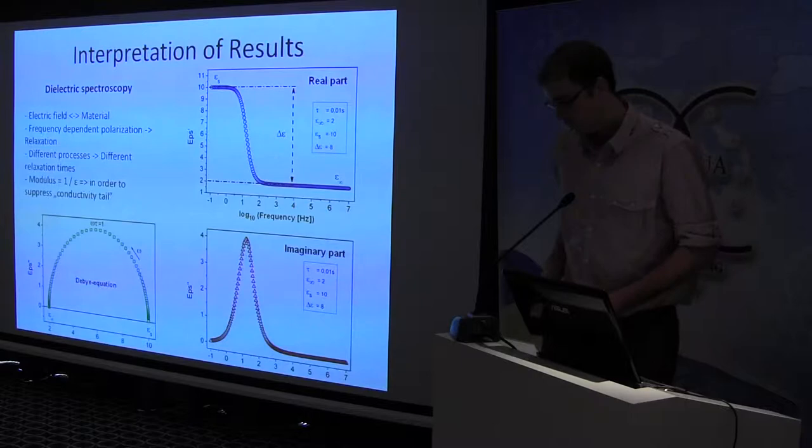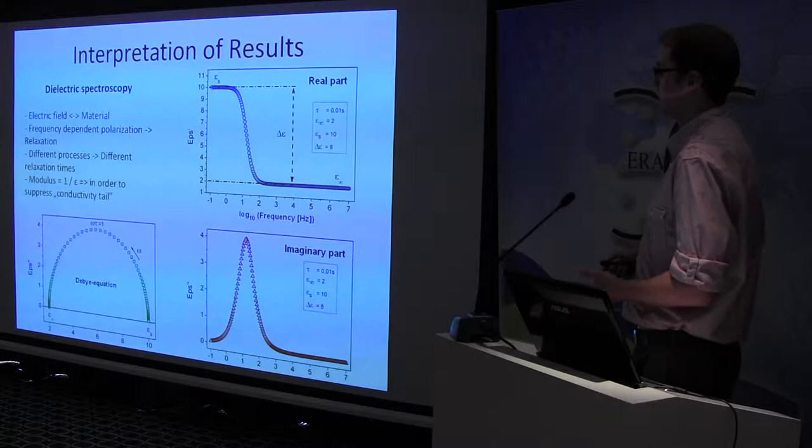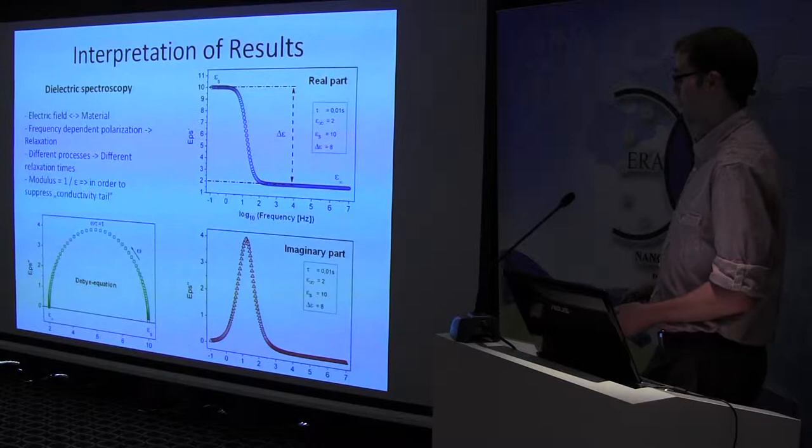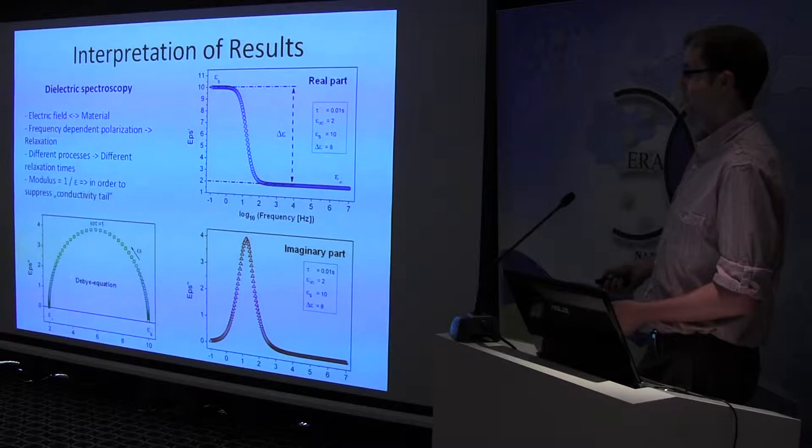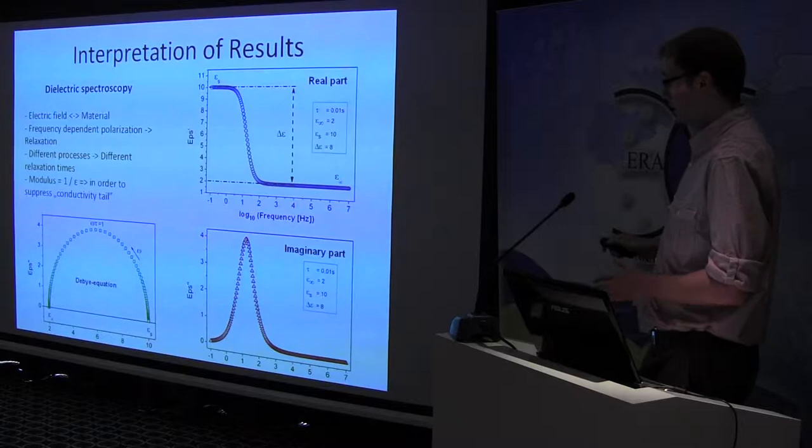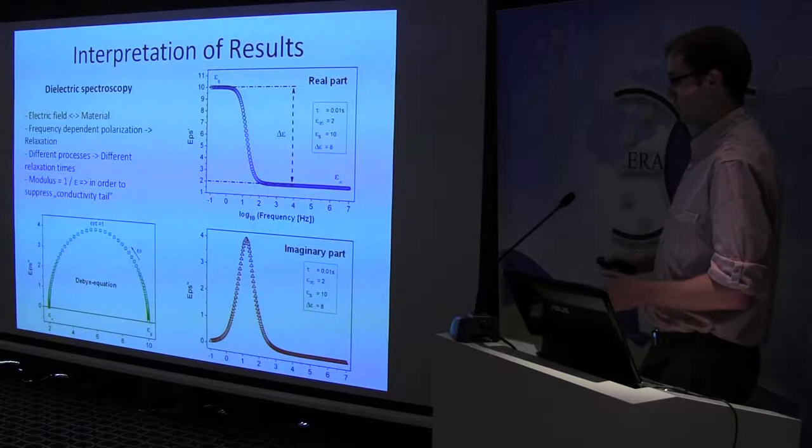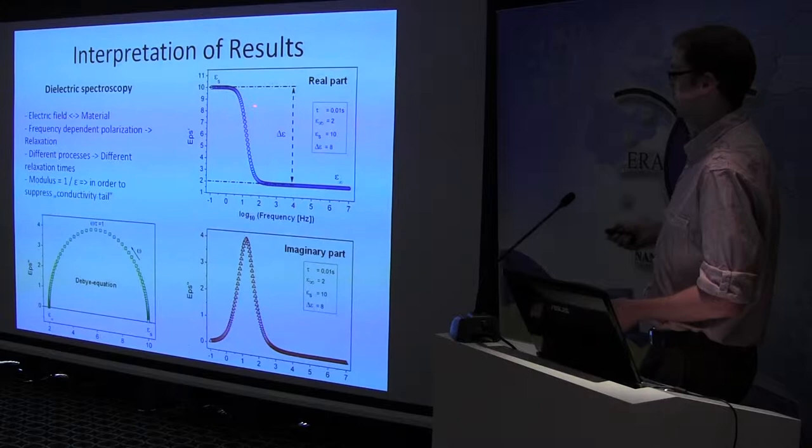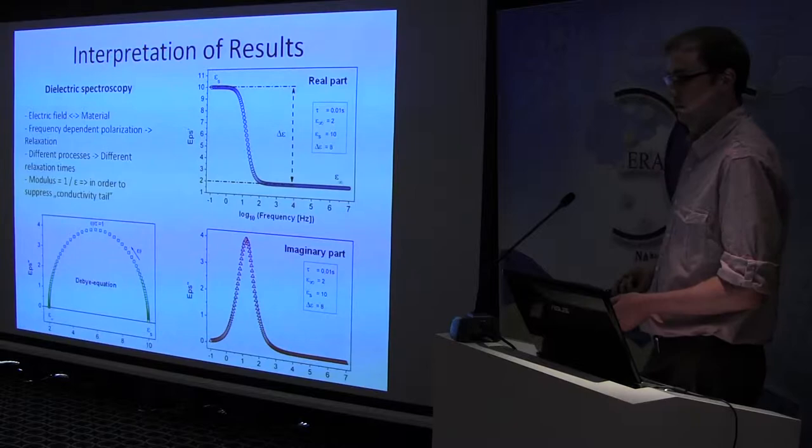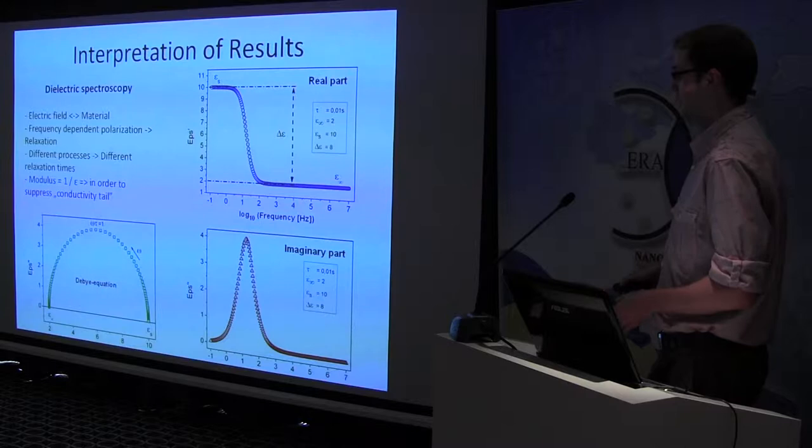When we analyze our sample's dielectric response, we usually plot the real and imaginary part of permittivity as a function of frequency. And there is another representation of the results, which is called the Cole-Cole representation, where the imaginary part is plotted as a function of the real part. And this is the case when a pure dipole relaxation occurs in our sample. So, when a pure dipole relaxation occurs, we get a dispersion in the real part and a peak in the imaginary part. However, in practice, there are much more complicated processes that can occur in our sample.